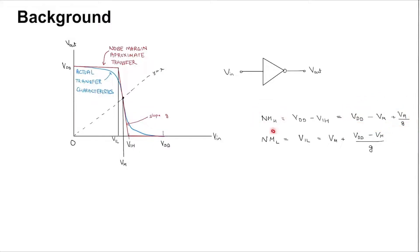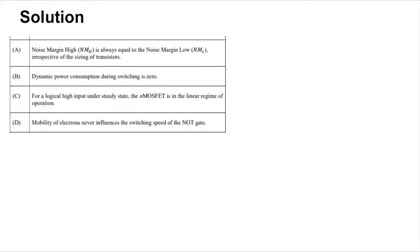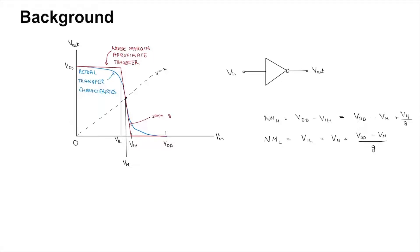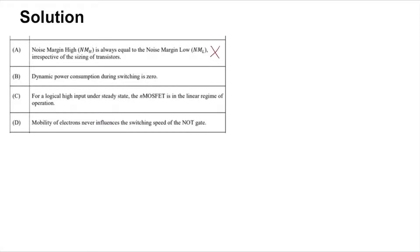Now the first point will require this background. The idea is that the relative sizing of the PMOS and NMOS will affect the trip point VM, and you can see that for certain values of VM it can be that noise margin high is not equal to noise margin low. So option A is not true.